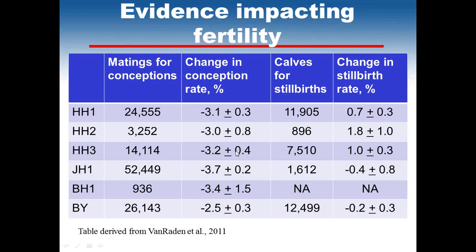This 3% reduction is much larger than the standard errors that are reported. Paul also had information on stillbirths — there were fewer matings and animals carried to term available to evaluate. In terms of significance, all haplotypes had an increase in stillbirth rate. Haplotype 2's standard error is relatively large, so that one is not significant, but each of the other two are greater than two standard deviations and are considered significant. Brachyspina showed a similar reduction in conception rate but did not tend to have any increase in stillbirth rate.